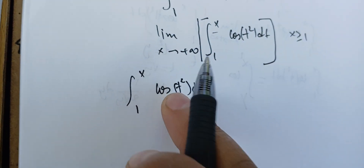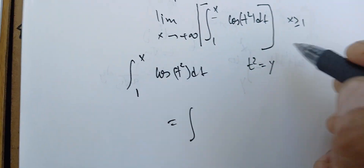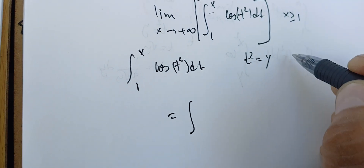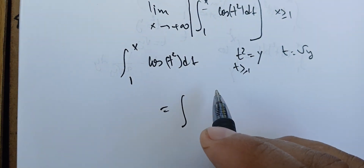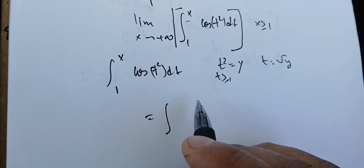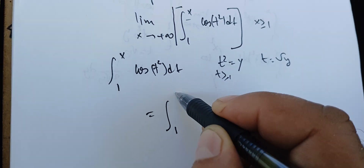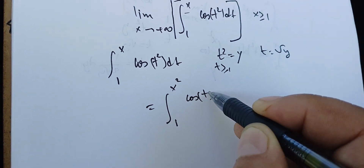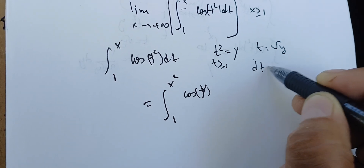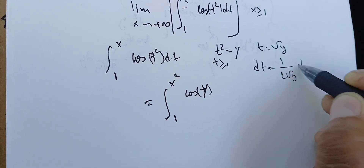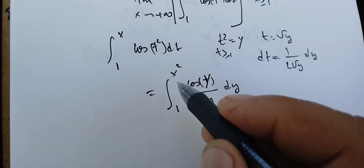Now let's focus on the integral from 1 to x of cosine(t²) dt. The first thing we're going to do is get rid of the t squared, so we change t to y. Since t is bigger than 1, we have t equals square root of y. When t is 1, y is 1; when t is x, y is x squared. Cosine(t²) becomes cosine(y), and dt becomes 1 over 2 square root of y dy.